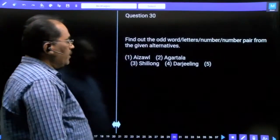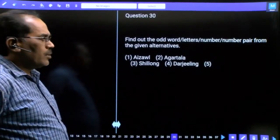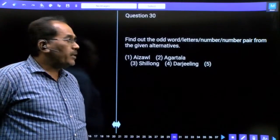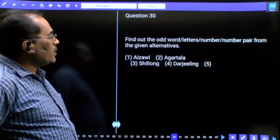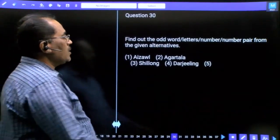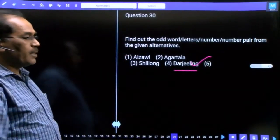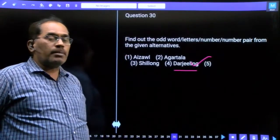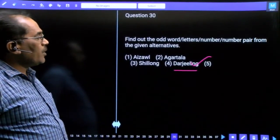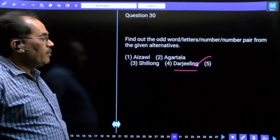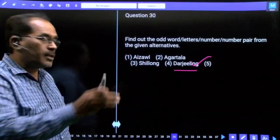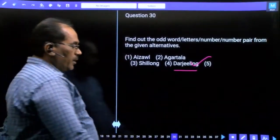Question number 30, find out the word. This is word classification. Aizawl, Agartala, Shillong, Darjeeling. Our answer is Darjeeling. The remaining are state capitals. Aizawl is Mizoram capital, Agartala is Tripura capital, Shillong is Meghalaya capital, whereas Darjeeling is not a state capital.